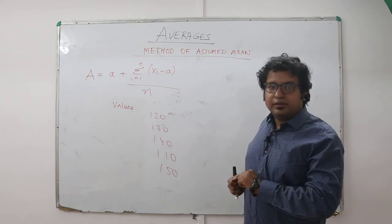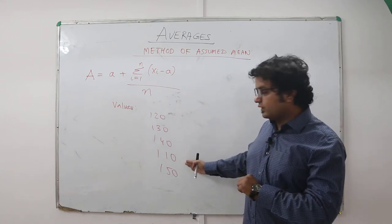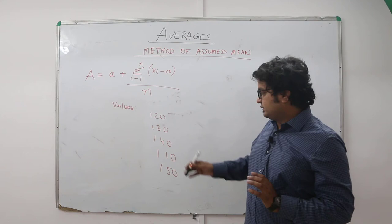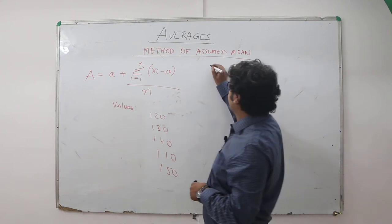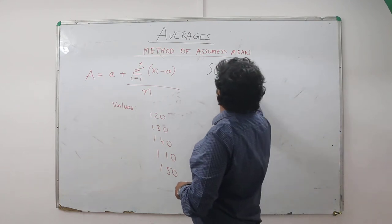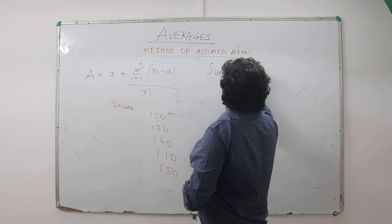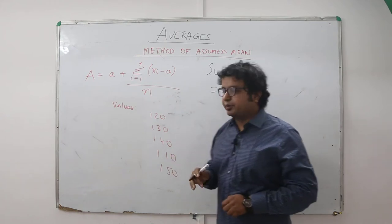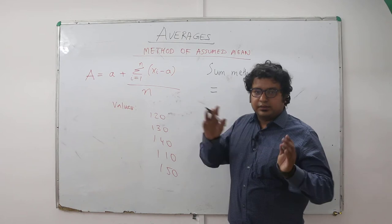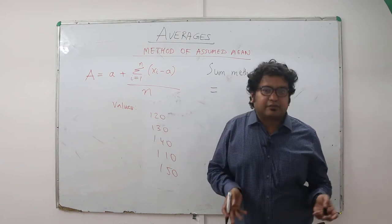There are five values given and you have to find out the average of these five values. The first method again is the sum method, where we use the formula average is equal to sum of values divided by number of values.